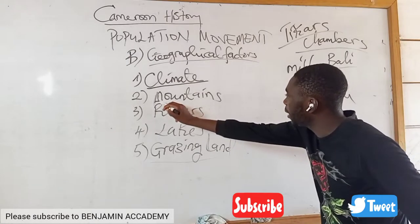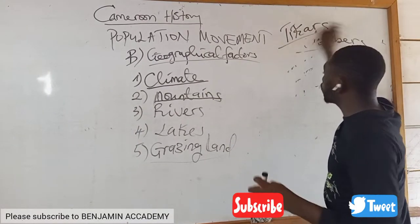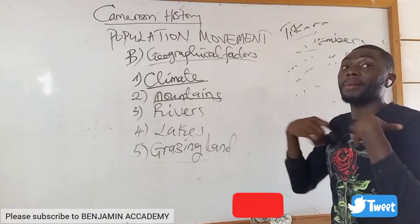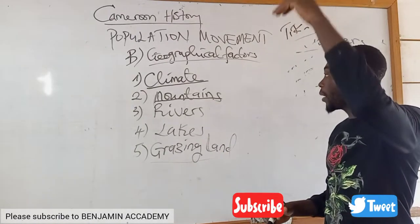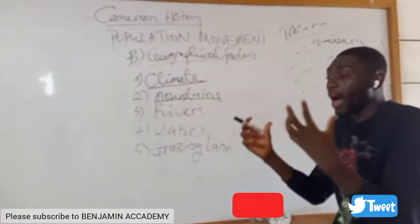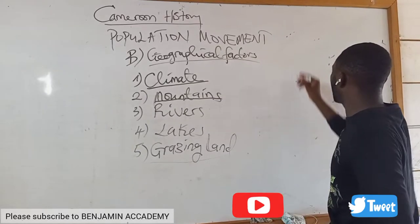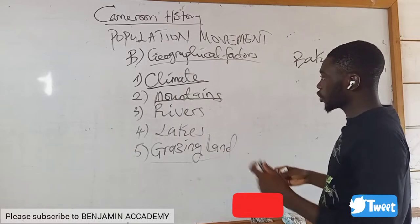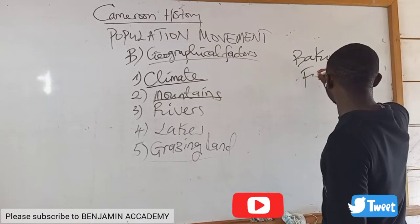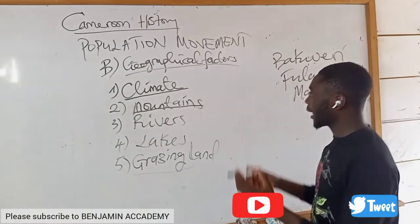Our second geographical factor is mountains. Mountains also led to the migration of people. People migrated mostly towards mountain summits, to the top of the mountain, because they were escaping from their aggressive neighbors. They felt that on top of the mountain, if an enemy was coming, they could easily see and fend them off. Others migrated to the mountain summit because they knew there was a mild climate there. We have the Bakperi migrating towards the slopes of Mount Cameroon because they needed a good climate. We also have the Fulanis who moved towards the Mandara Mountains in northern Cameroon because they needed the climate of the mountains.